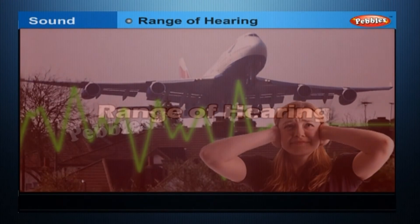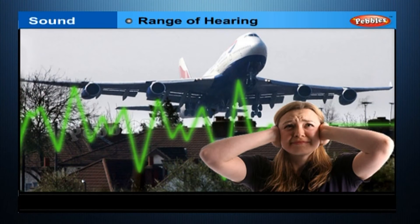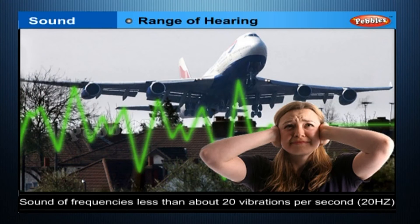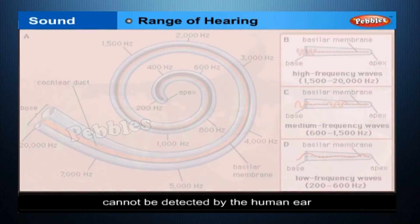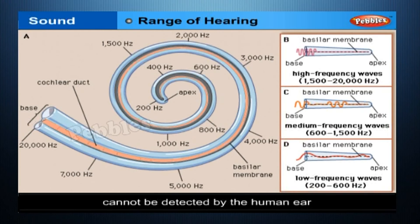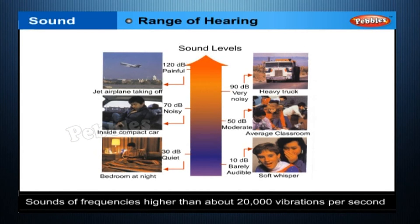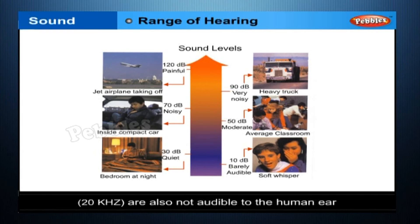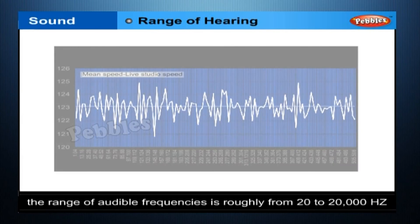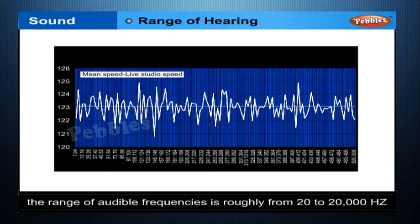Range of Hearing — Audible and inaudible sounds. Sounds of frequencies less than about 20 vibrations per second, i.e. 20 Hz, cannot be detected by the human ear. Such sounds are called inaudible. On the higher side, sounds of frequencies higher than about 20,000 vibrations per second, i.e. 20 kHz, are also not audible to the human ear. Thus, for the human ear, the range of audible frequencies is roughly from 20 to 20,000 Hz.